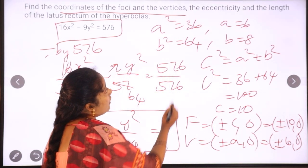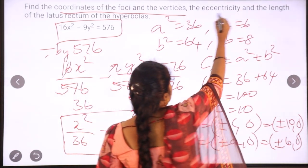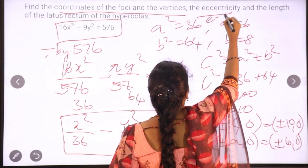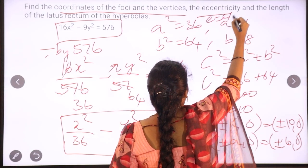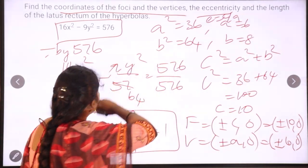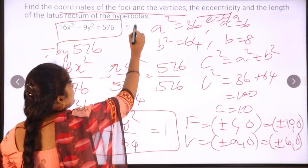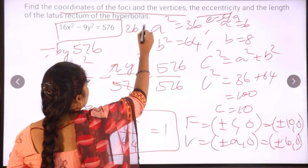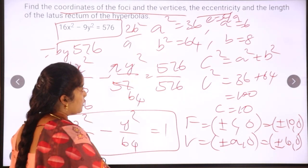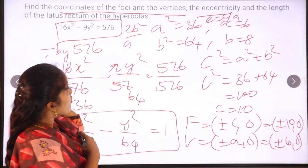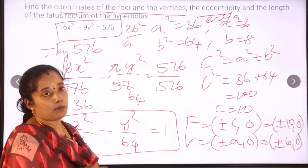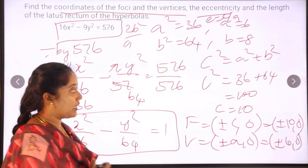The eccentricity formula is e equals c by a — apply it. The length of the latus rectum formula is 2b squared by a. Since a and b values are already known, just apply the formula to find the values.